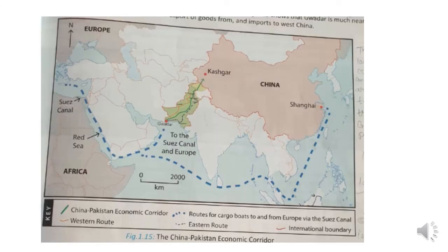On the map, Shanghai and Kashgar can be seen — Shanghai is in the eastern and Kashgar is in the western part of China. Shanghai is the most developed port, but through Shanghai, China has to take a long route to reach Africa and Europe for trading purposes. From Kashgar to Gwadar there is a shorter route, and it can save time and transportation cost equivalent to 10,000 miles.